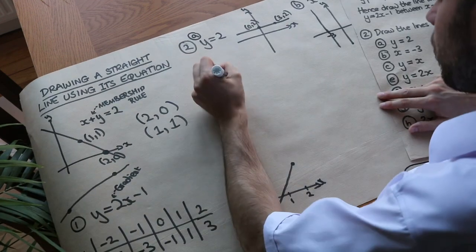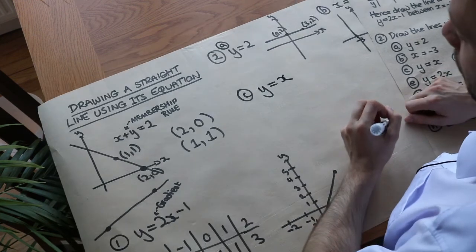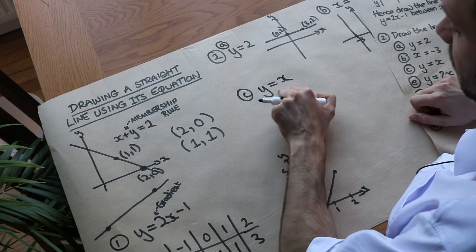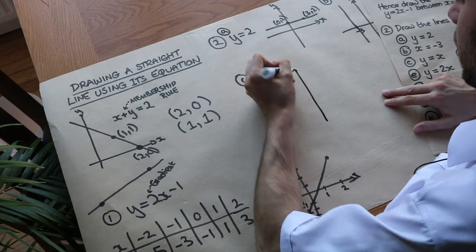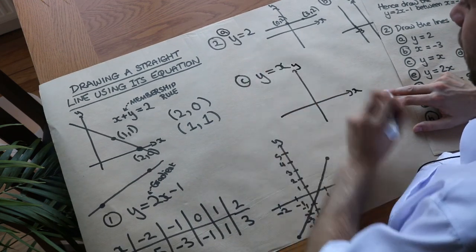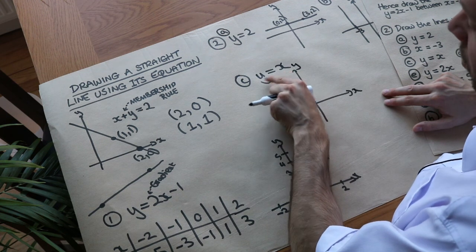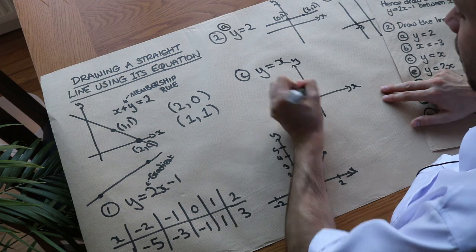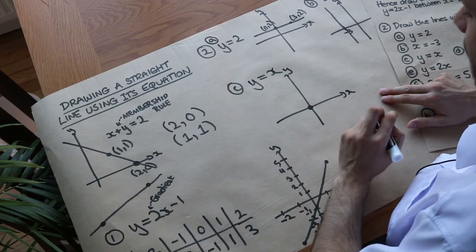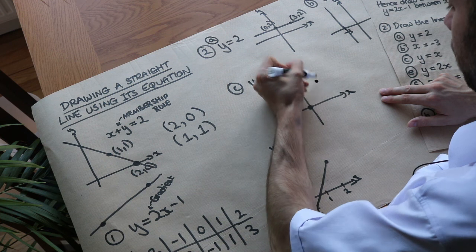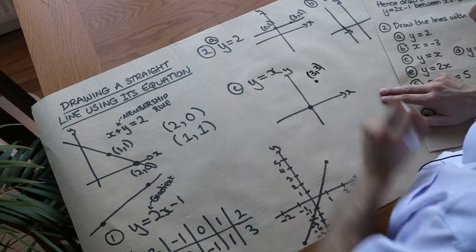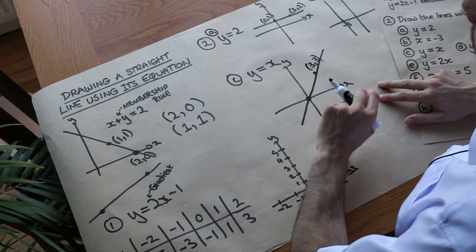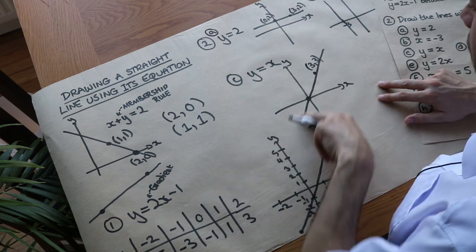Now we've got y equals x, which is a bit more complicated. This membership rule says whatever the x value is, the y value has to equal that x value. If x is 0, y has to be 0 — so we've got (0, 0). If x is 3, y also has to be 3 — so we plot (3, 3) and join it up. Y equals x is a diagonal line at 45 degrees going through the origin.